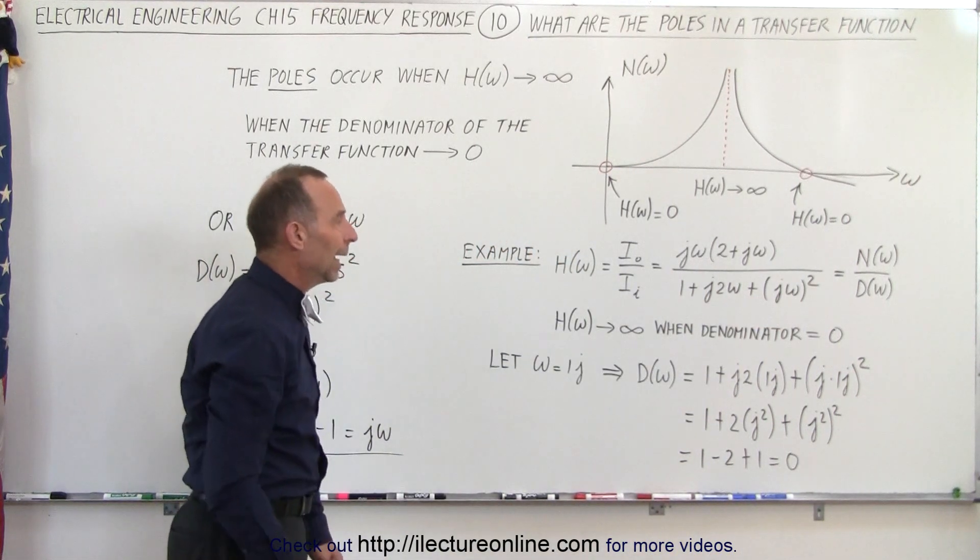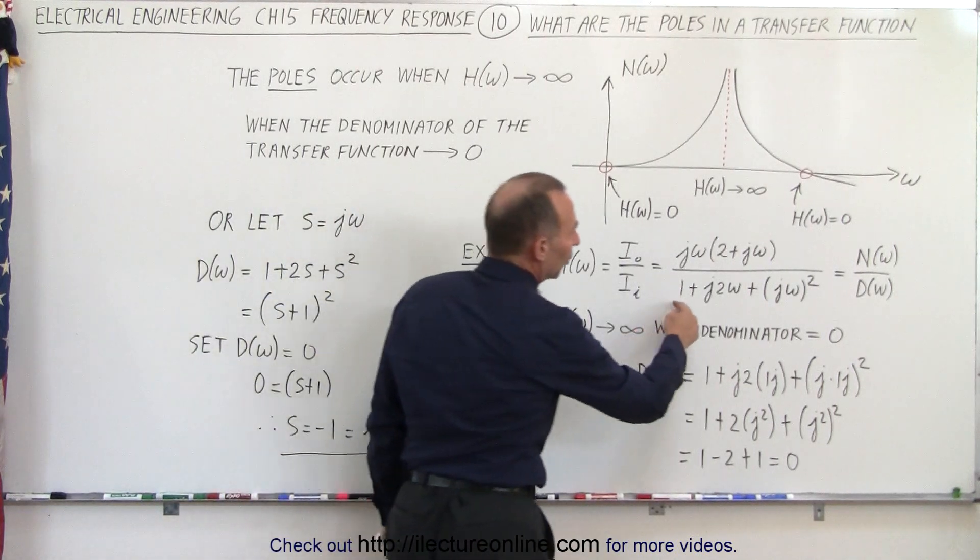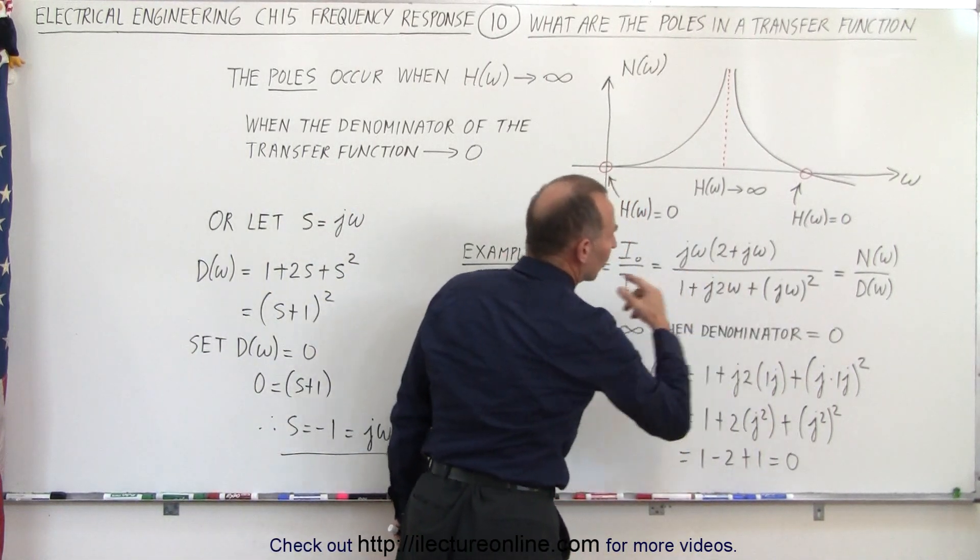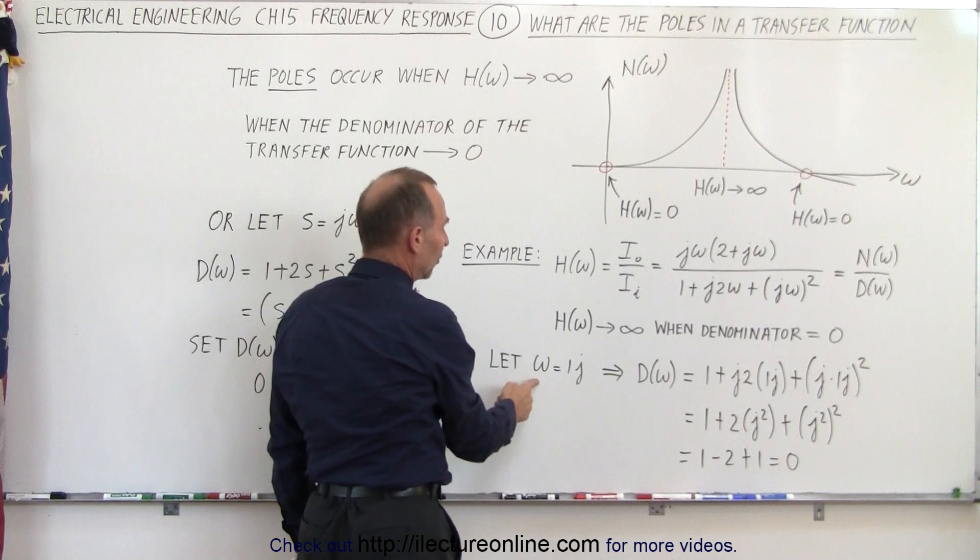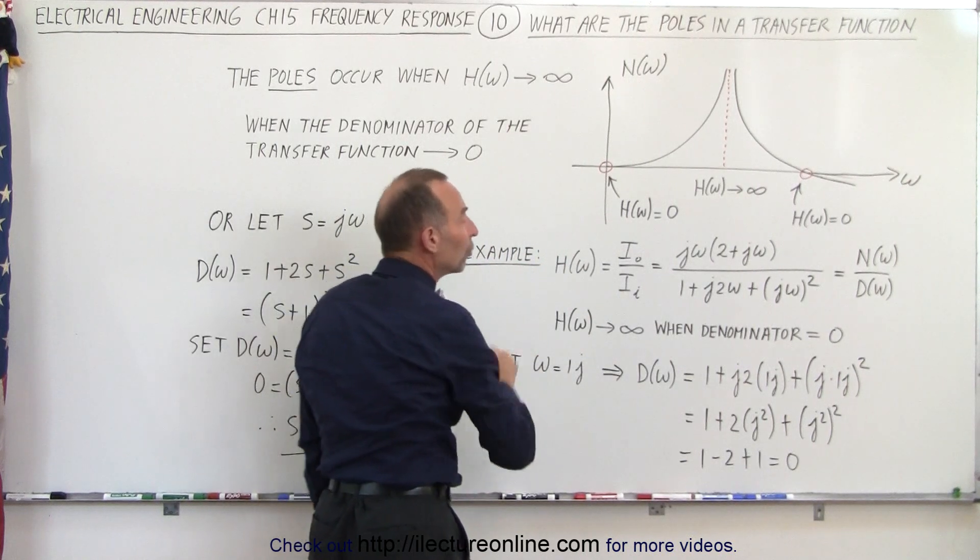So here we have an example, and in this example we're going to explore how we can make that denominator go to zero. So in this case, let's say that omega equals 1j.